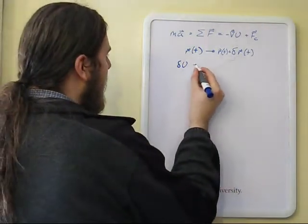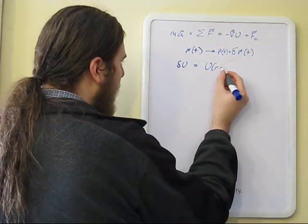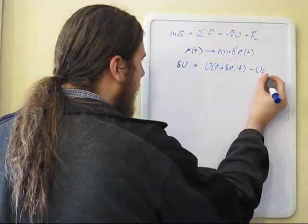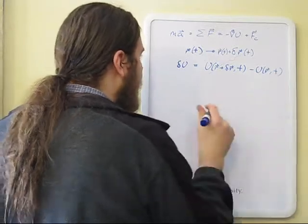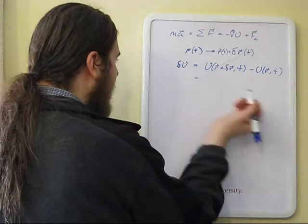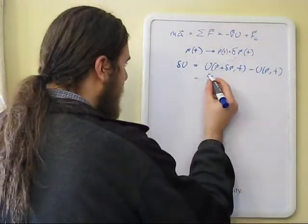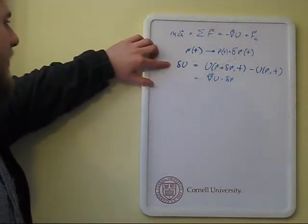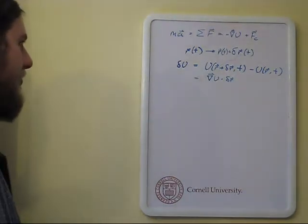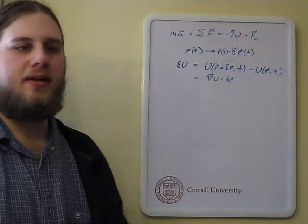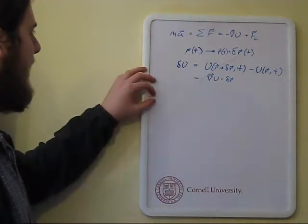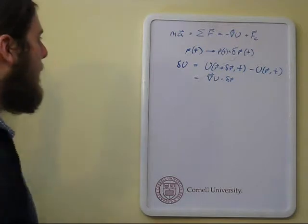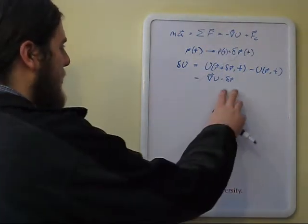the path perturbation of u, which would be u of r plus delta r comma t minus u of r t. We can very well talk about that, and to first order, this is going to be grad u dot delta r. So we can very well talk about delta as an operator in its own right. It behaves, for all intents and purposes, like a position differential. It is, in fact, more of a partial differential. It doesn't count into effect a change in time. But it's a position-based differential in practice.